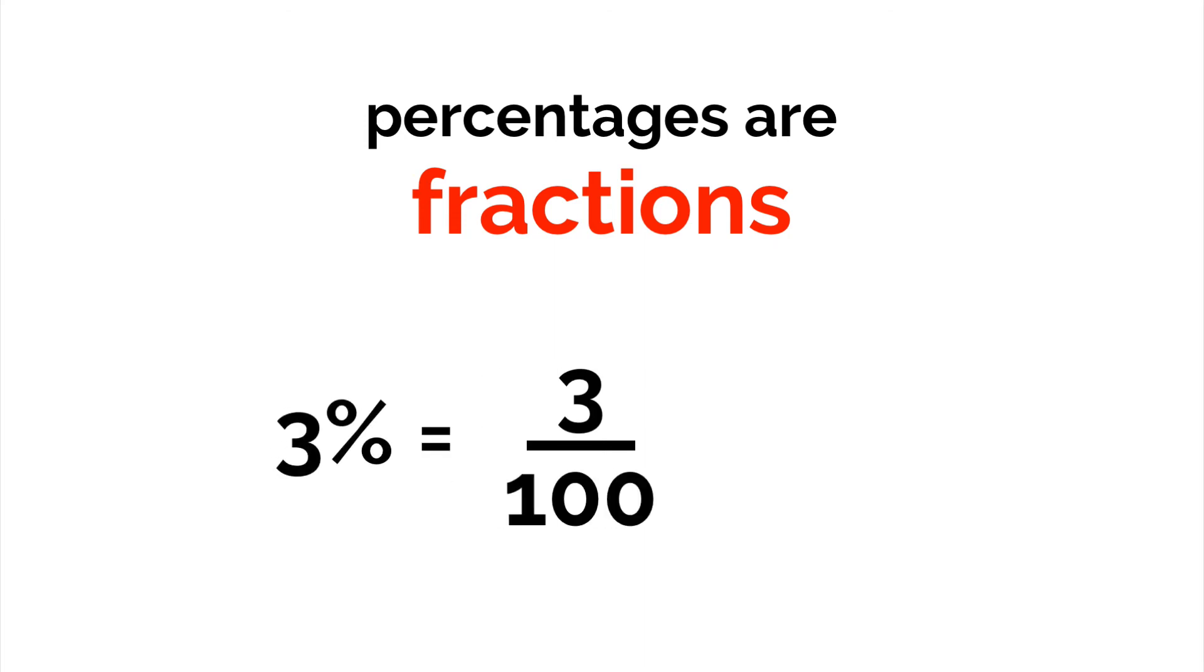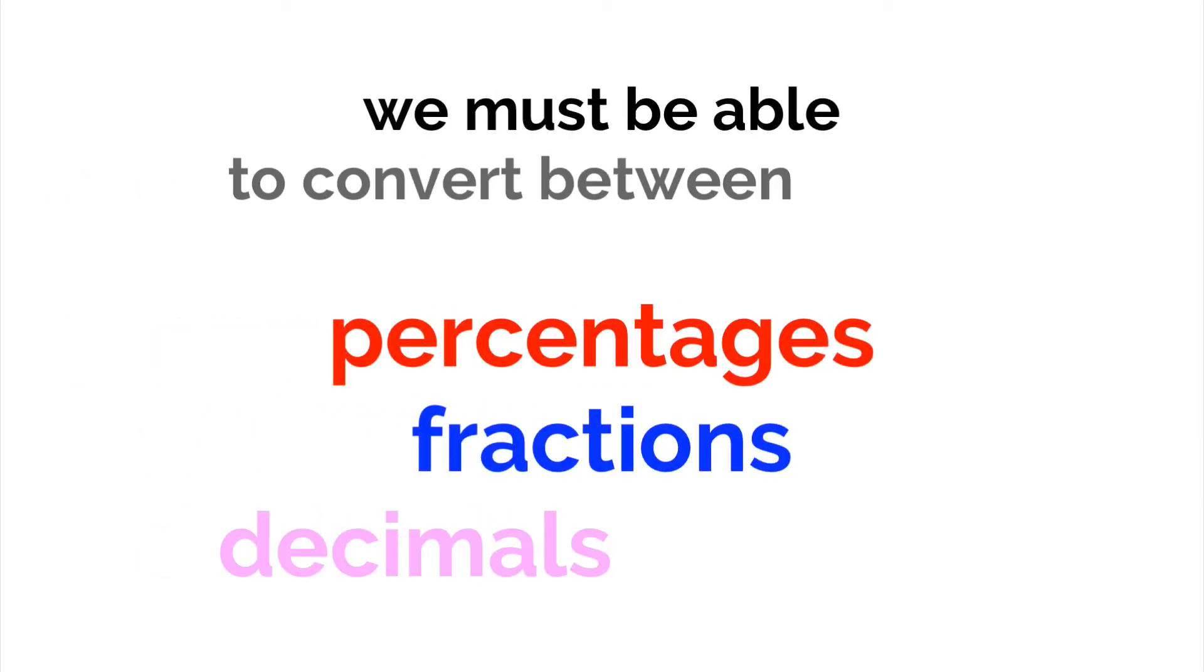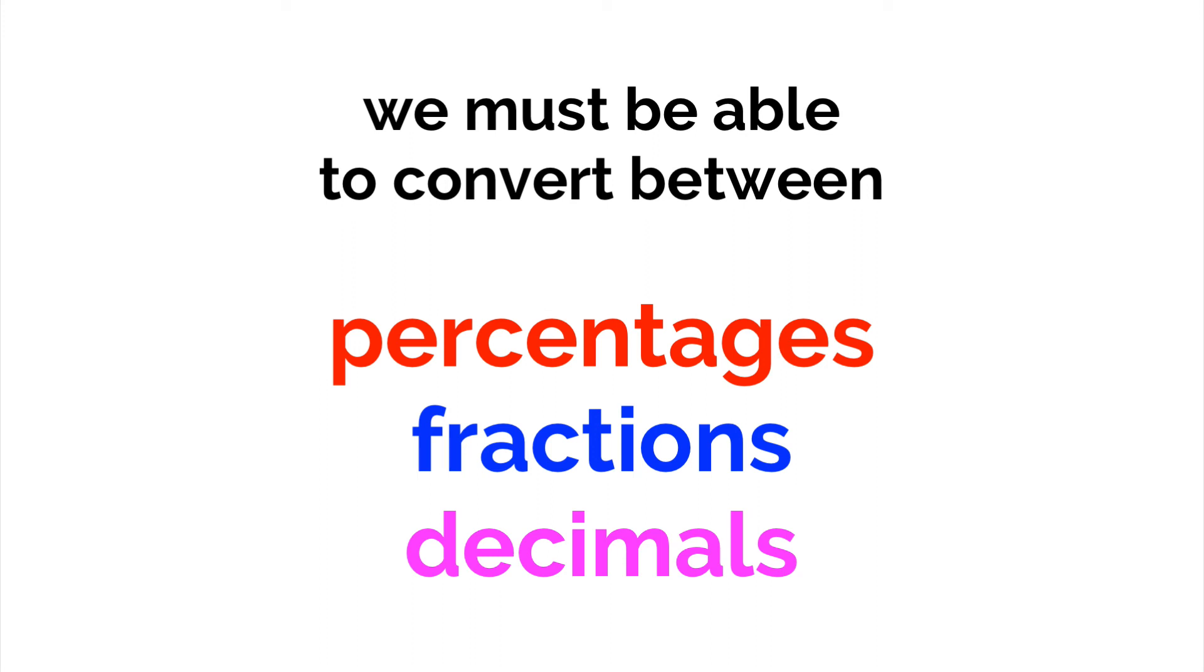If you have something like 3%, that is 3 one-hundredths, and that can't be simplified any further. We should be able to convert between percentages, fractions, and even decimals in this way with relative ease.